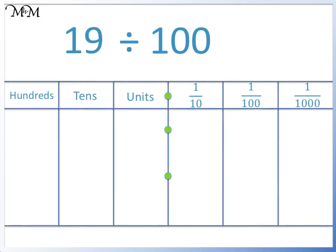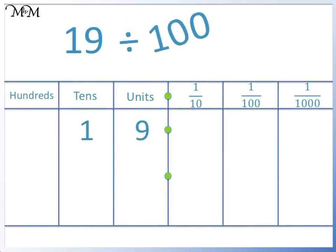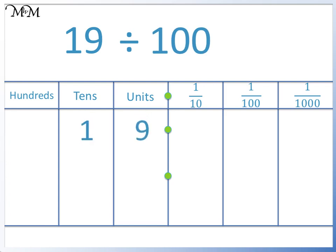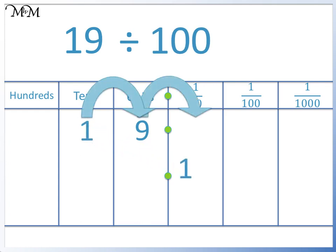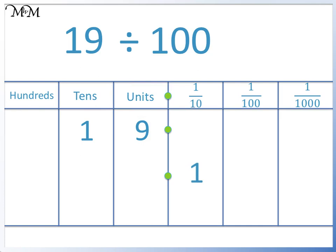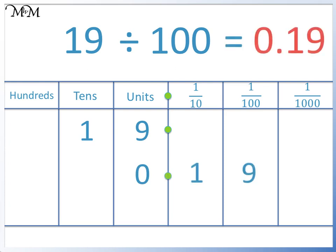19 divided by 100. We are dividing by 100, so we are moving each digit two places to the right. Starting with the 1: 1, 2. We have moved the 1 to the tenths column. We move the 9 to the hundredths column. Because there are no digits in front of the decimal point, we write a 0 in the units column. We have 0.19. So 19 divided by 100 equals 0.19.